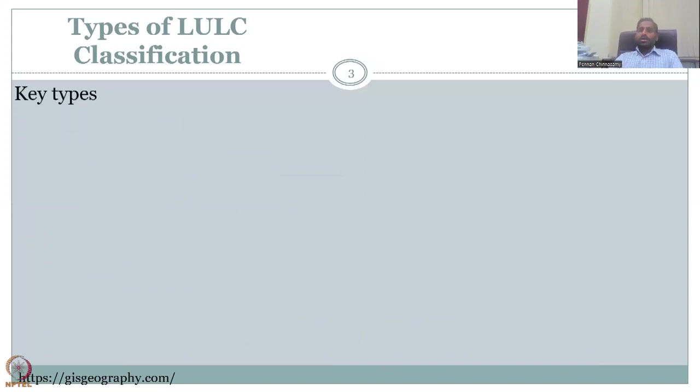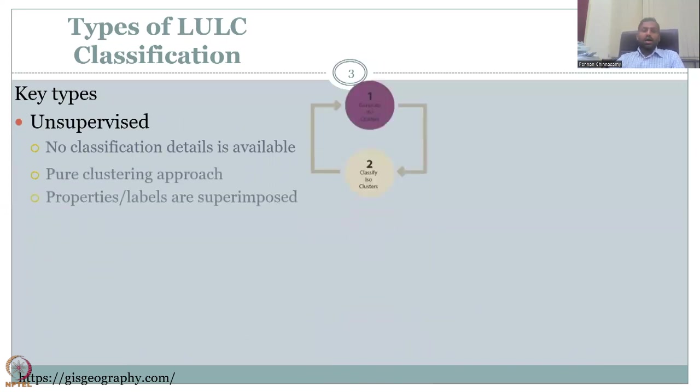So let's discuss the first, the types of land use land cover classification. Mostly there are three types, depends on which book or reference you use, but mostly it is three types. In some books that we read just two types, which is unsupervised classification and supervised classification. We will be teaching the three types.